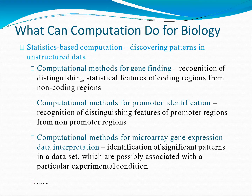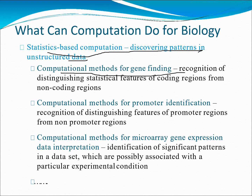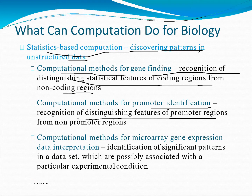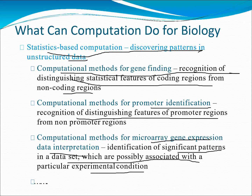Statistics-based computation enables discovering patterns in unstructured data. Computational methods for gene finding involve recognition of distinguishing statistical features of coding regions from non-coding regions. Computational methods for promoter identification involve recognizing distinguishing features of promoter regions from non-promoter regions. Additionally, for microarray gene expression data interpretation, computation enables identification of significant patterns in datasets possibly associated with particular experimental conditions.